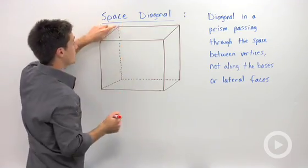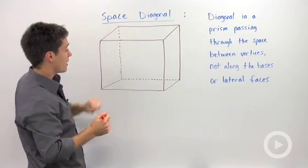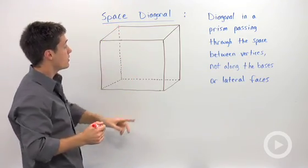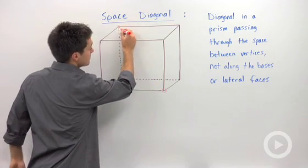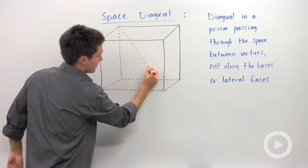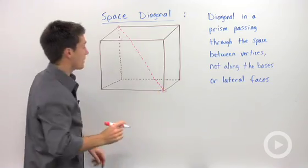Let's say we started at this vertex right here, which is in the upper left. The space diagonal will go all the way down to this lower right vertex. So if I drew that in, it's going to look something like that.